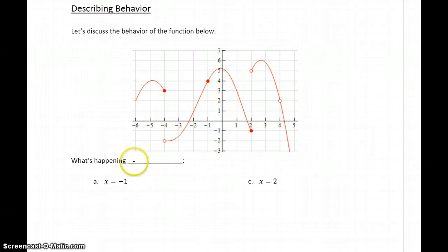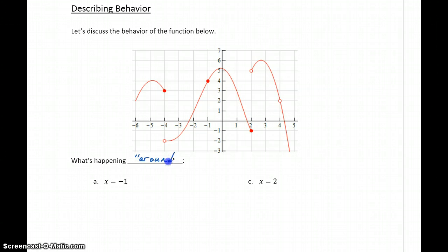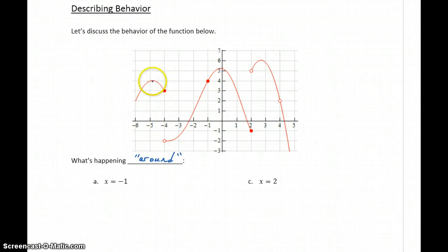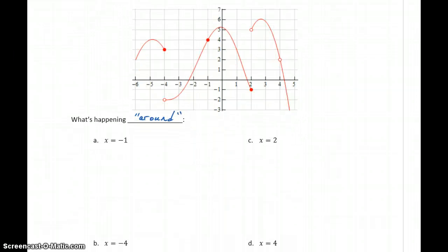What we want to do is give some information about what's happening around these different x values. We're interested in knowing what's happening at a specific x value — what's happening as we approach from each direction — and sort of combining all of that information together.